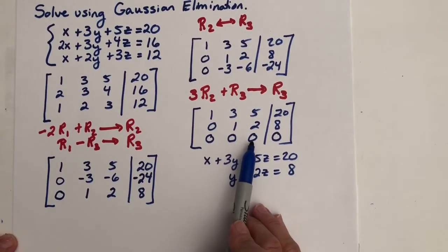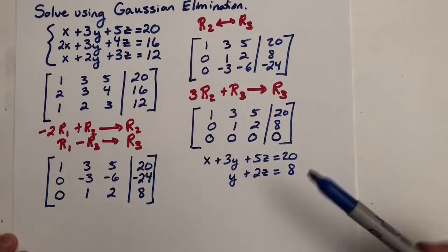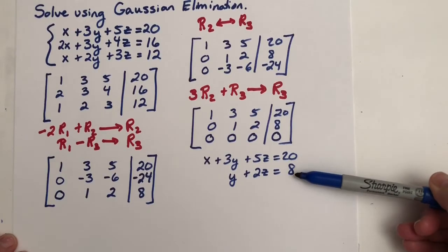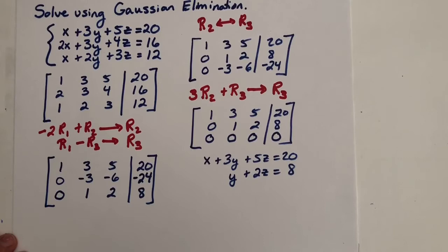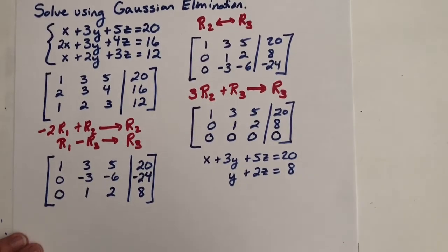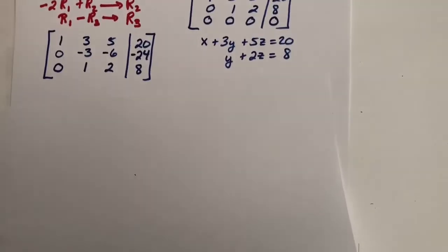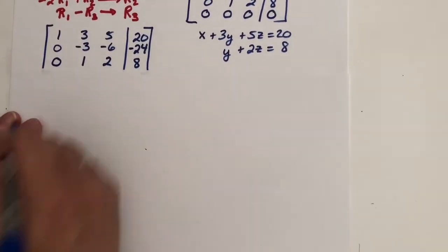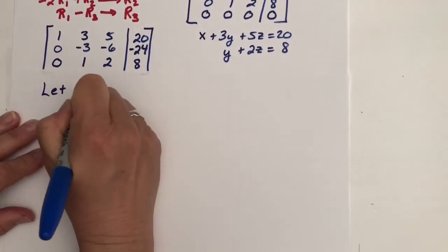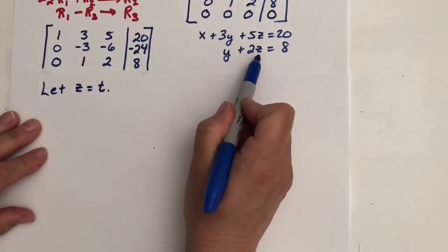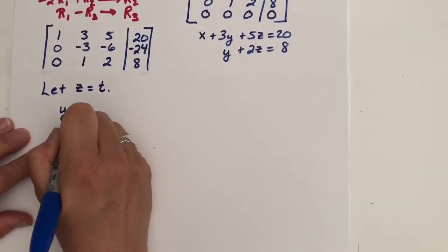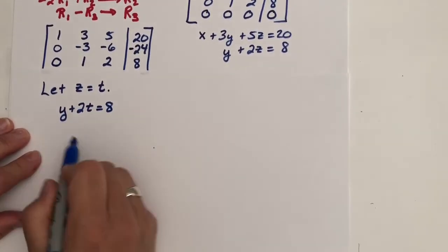And our third row doesn't give us any more information about the relationships between x and y and z because it's essentially 0x plus 0y plus 0z equals 0. So here's what we have. Notice we have two equations and three variables. That means we have a dependent system and there are infinitely many solutions. But we want to be able to give a good representation of those infinitely many solutions. So we're going to introduce a parameter. So we're going to let z equal t.